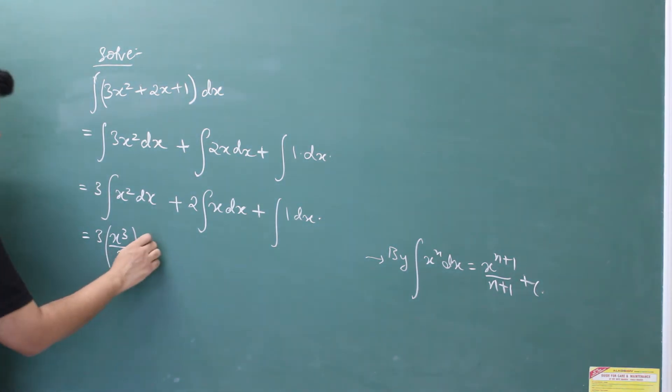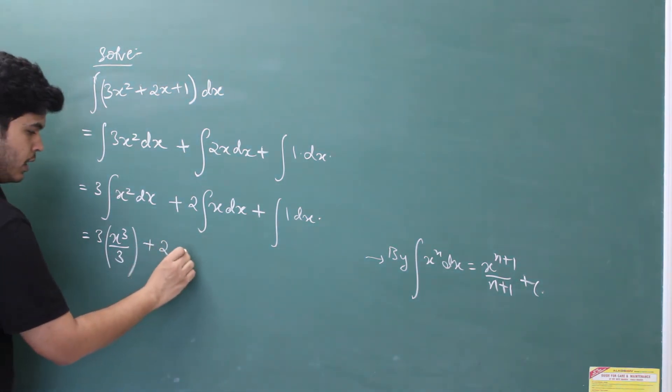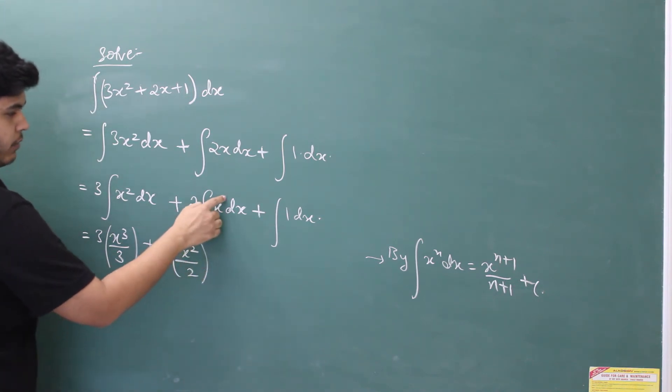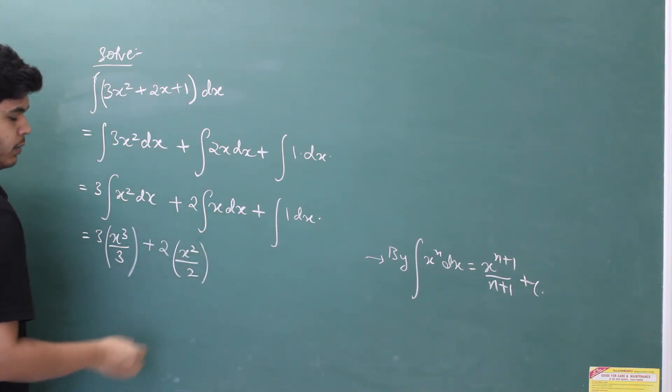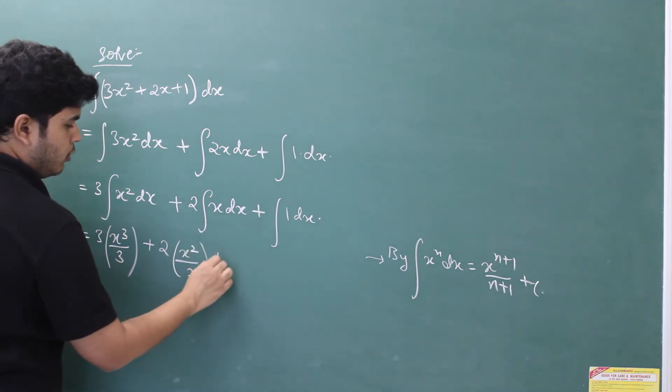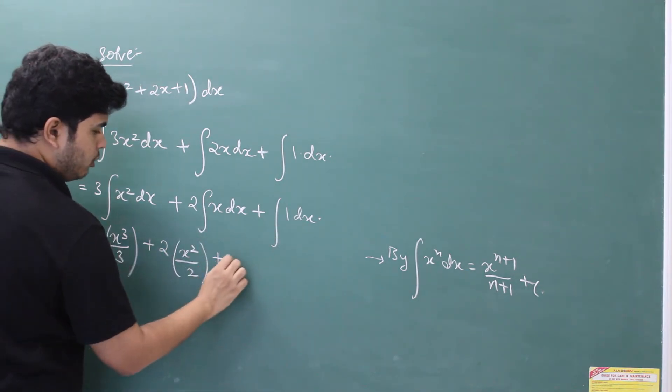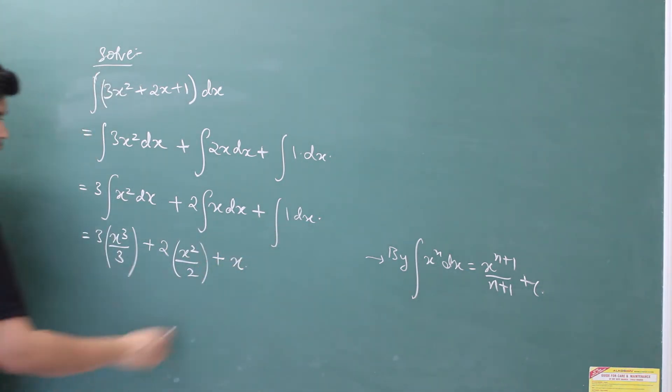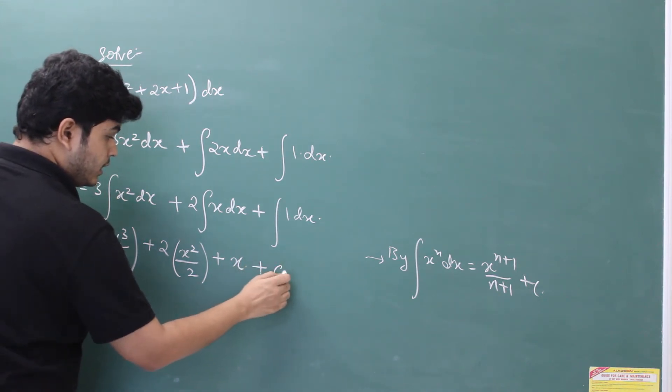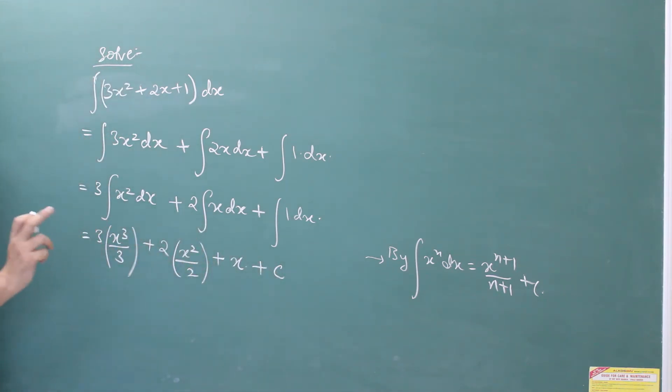After this, for the second term 2, x squared by 2, we have added 1 in the power and divided by the power. Now plus 1 dx will always give you x. And the last part, plus c, constant of integration. Don't forget about it during indefinite integration.